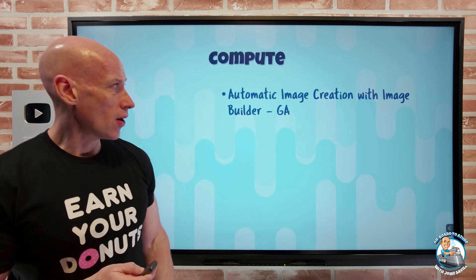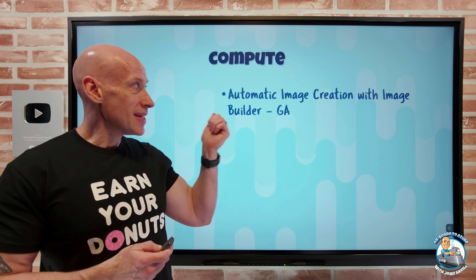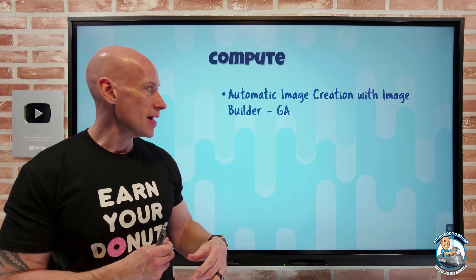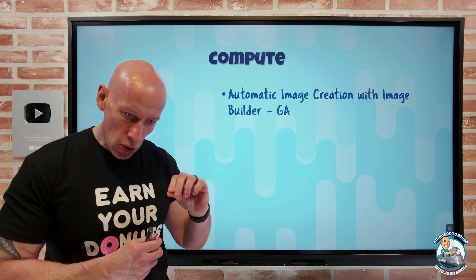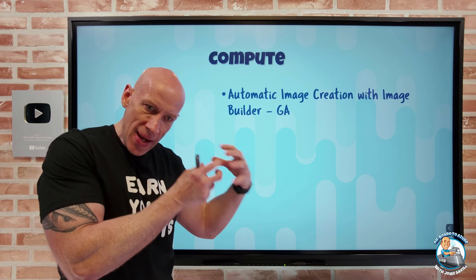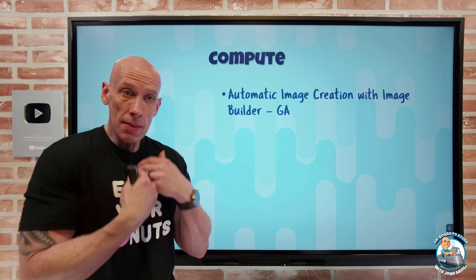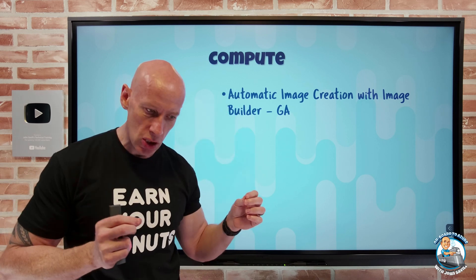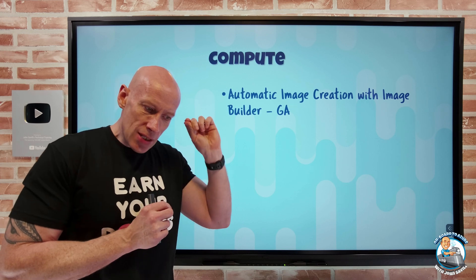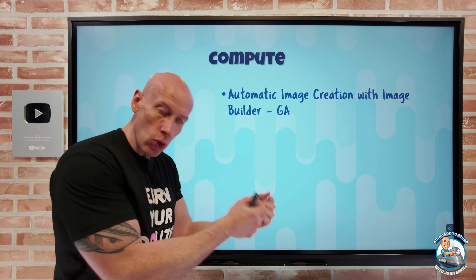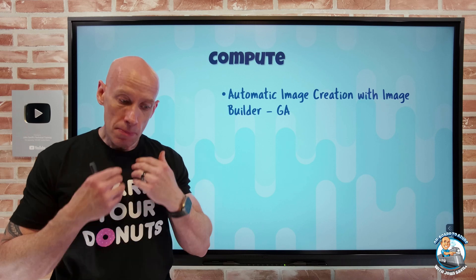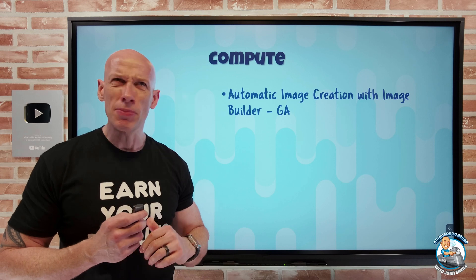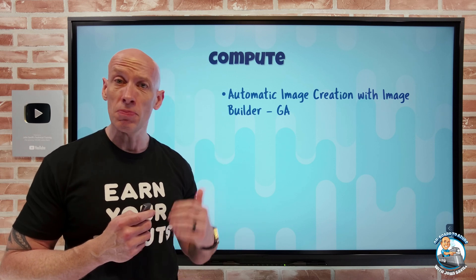On to what's new on the compute side. Automatic image creation with the Azure Image Builder, based on Packer technology, is now GA. If I have some base image that I'm creating my image off of, when that base image has updates, it will automatically trigger my custom build and create my own new version. I can have up to 100 triggers per region per subscription.